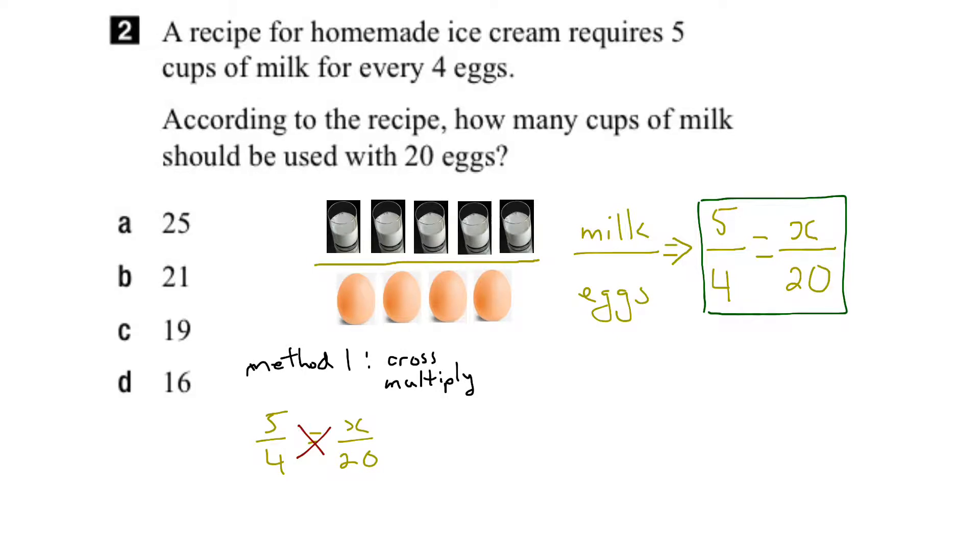So when we do that, 5 times 20 becomes 100 equals 4 times x is 4x. And if we want to isolate the x by itself, then what we have to do is divide both sides by 4.